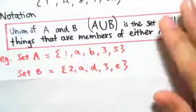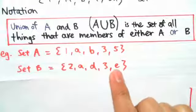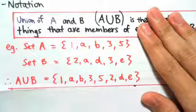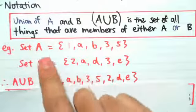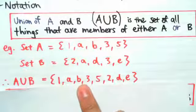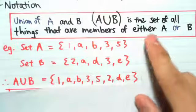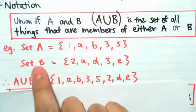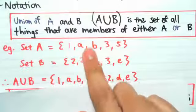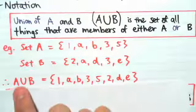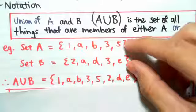Let's look at an example. Say I have two sets: set A being {1, A, B, 3, 5} and set B being {2, A, D, 3, E}. So A∪B is basically members of either A or B. Looking at members in A: 1, A, B, 3, 5, and also writing down the members in B. From set B that's 2, D, E — there's no need to write down A and 3 because they are already in set A. So A∪B equals this set, which are members in either A or B.